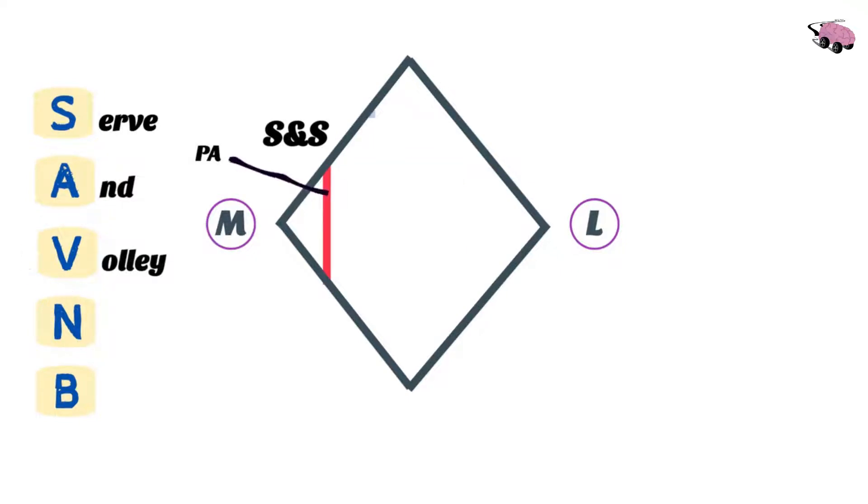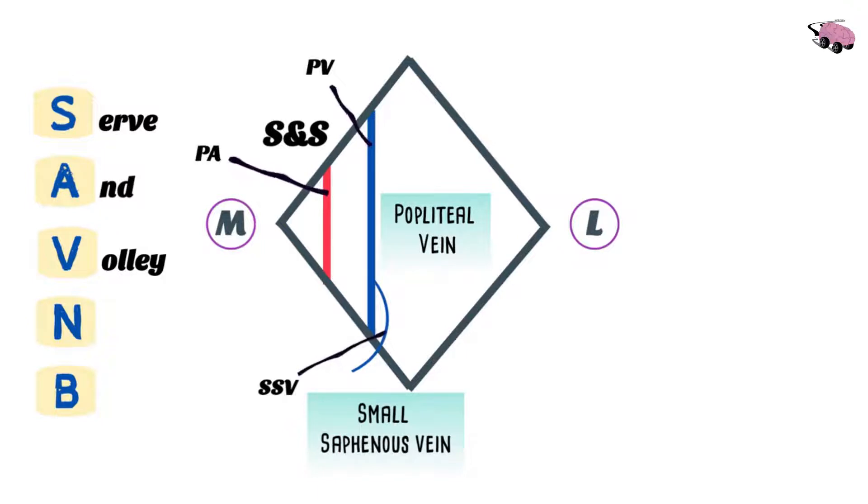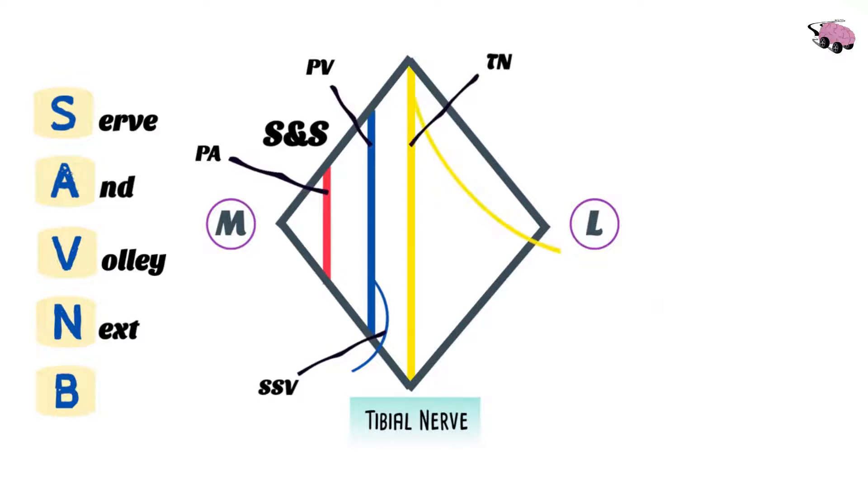V for volley is for vein, representing popliteal vein and the tributary, small saphenous vein. N, next, represents two nerves: tibial nerve and common peroneal nerve.